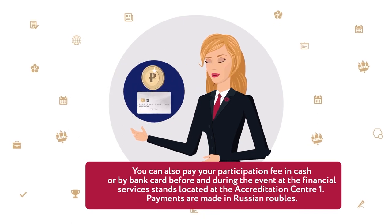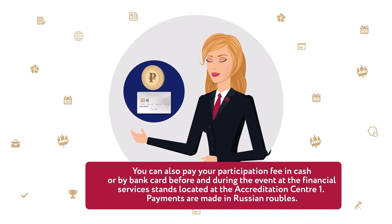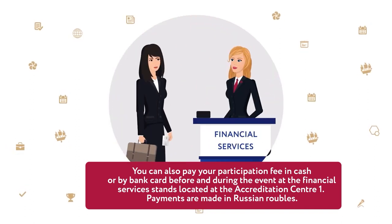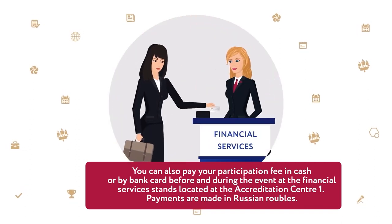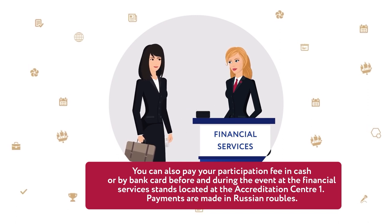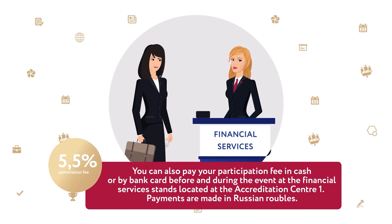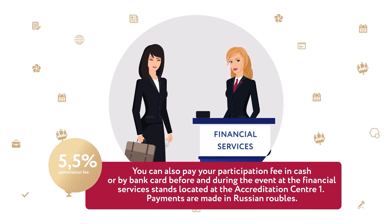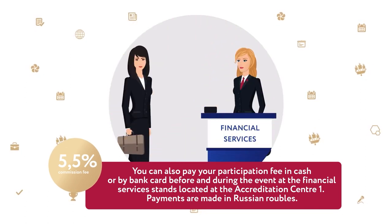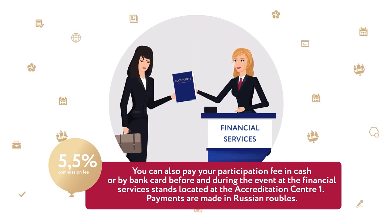On the day before and during the event, you can pay for your participation in the forum in cash in rubles, or buy a bank card at the financial services stands in Accreditation Center 1. If you choose the latter method of payment, an additional fee of five and a half percent of the participation package price will be charged. Payments are made in Russian rubles.